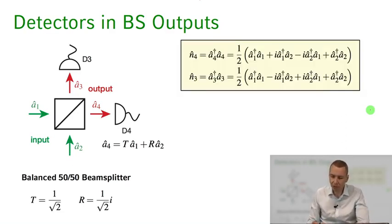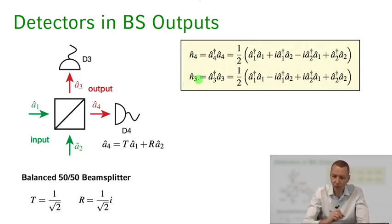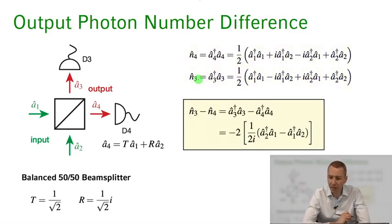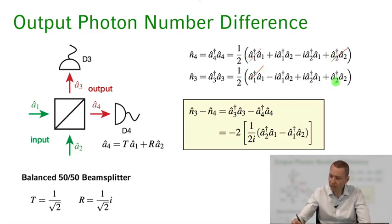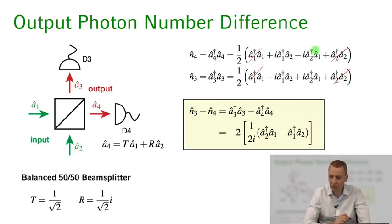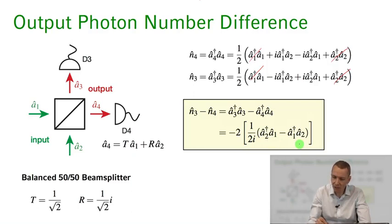I've written both number operators N̂₄ and N̂₃ down for comparison. Now let's take the difference N̂₃ − N̂₄. Taking this difference, the diagonal terms cancel, and the only remaining terms are the cross terms. So N̂₃ − N̂₄ is simply A₂†A₁ − A₁†A₂.